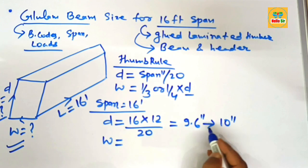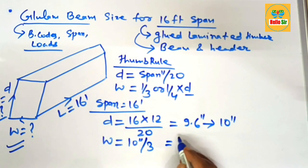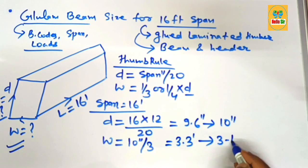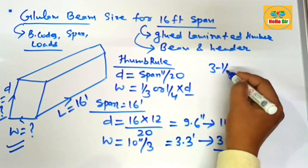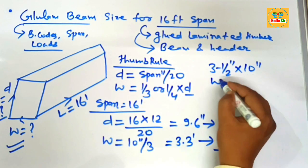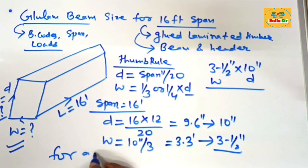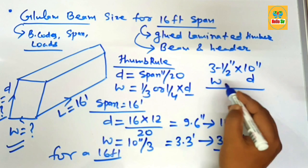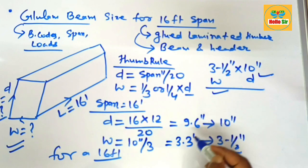The width section: 10 inches divided by 3 equals about 3.33 inches, so the nominal width is 3 and a half inches. This means for a 16-foot span, the correct size of a glulam beam should be 10 inches deep and 3 and a half inches wide.